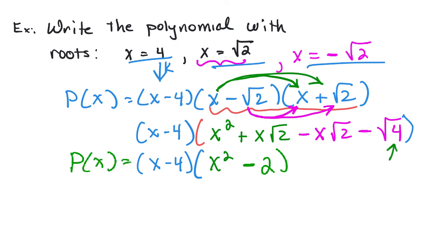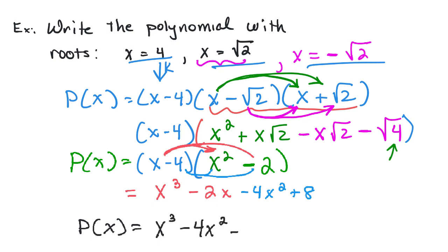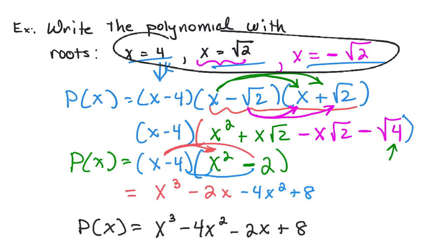Now multiplying x minus 4 by x squared minus 2: distribute x to get x cubed minus 2x, then distribute negative 4 to get negative 4x squared plus 8. In standard form, p(x) equals x cubed minus 4x squared minus 2x plus 8. We built that polynomial from scratch using the given solutions.